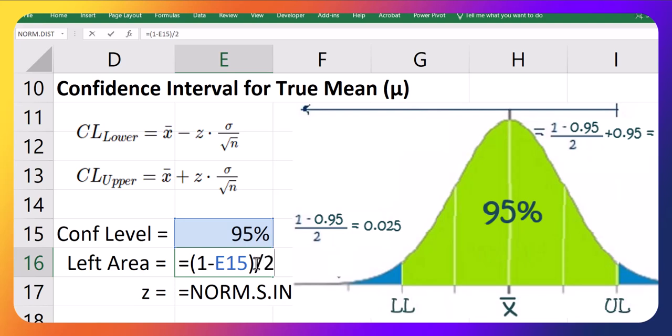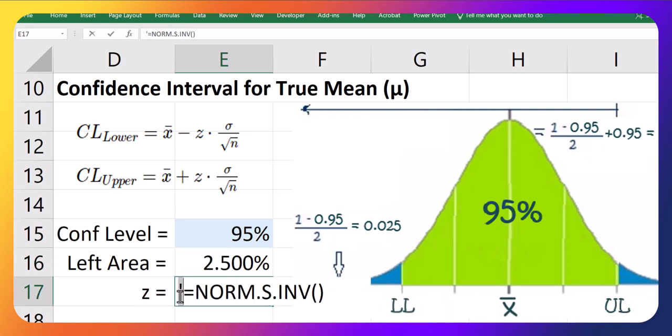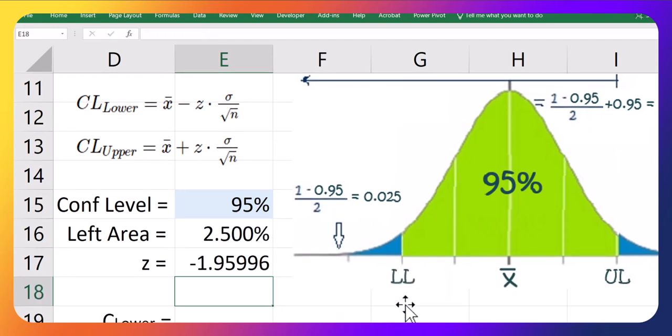Dividing that value by 2 gives the area on the left side. So that's the 2.5%. So that's this. So if I go use that as my area to the left here of my z-score, that's great. That will give me the z-score for this lower limit. No problem.